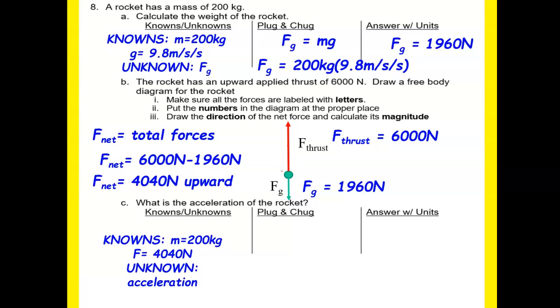Our mass of the rocket is 200 kilograms, so we're going to calculate our acceleration. So our formula for Newton's second law is F is equal to ma, or you can use the rearranged formula to solve for acceleration, which is net force divided by mass. Plug in all the information that has been given, so therefore my acceleration is 20.2 meters per second per second, or meters per second squared.